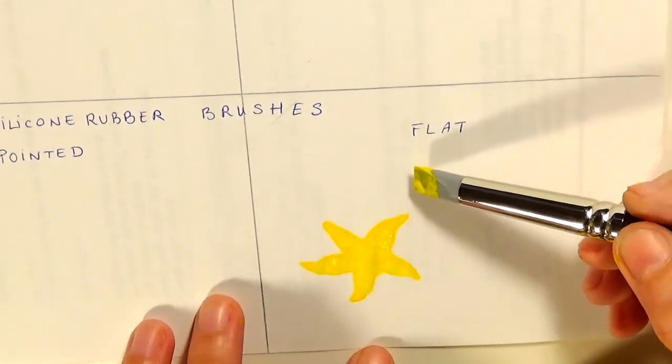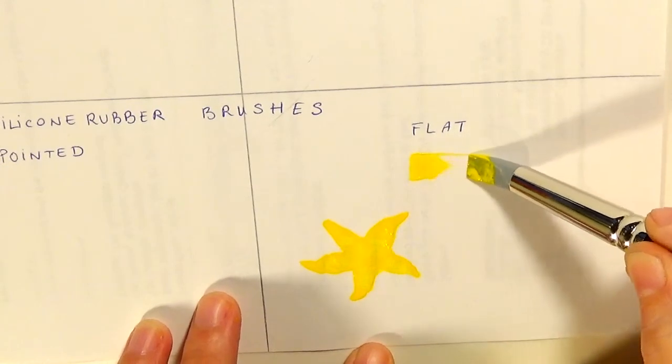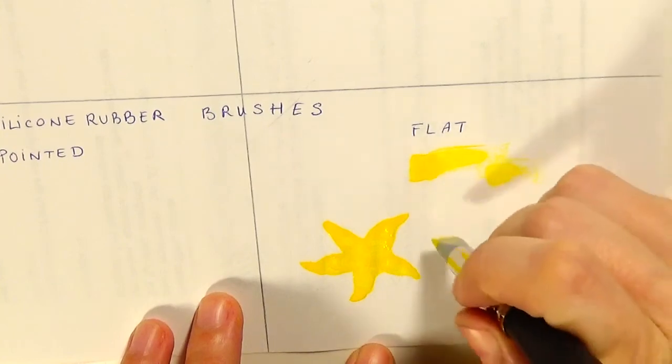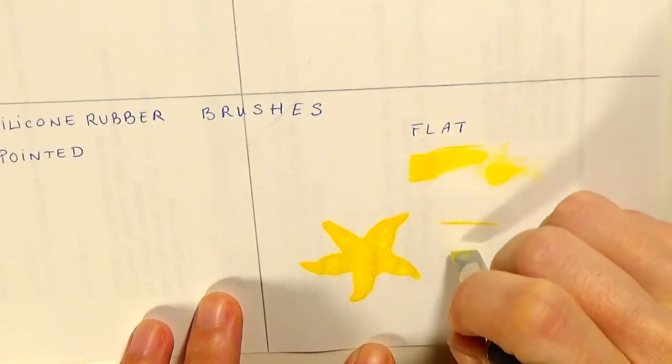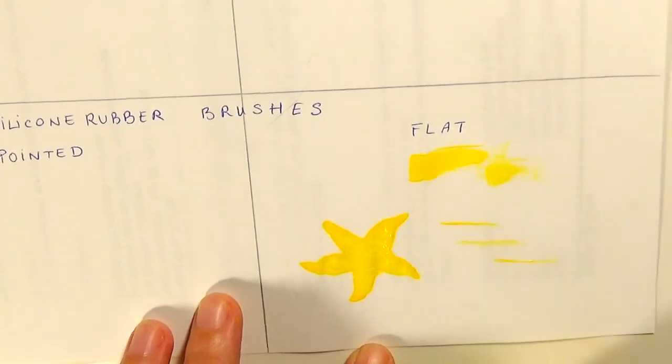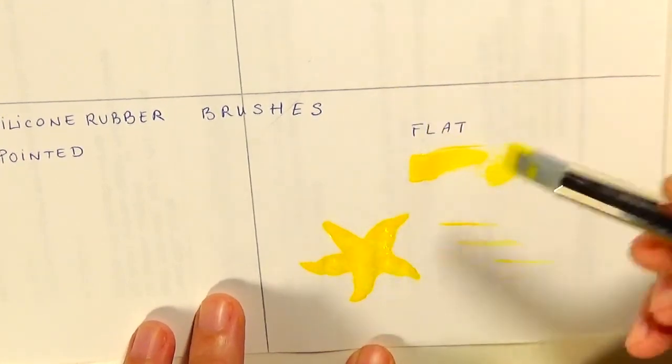You can also create wide lines, but you can also create narrow lines using the silicone brush.